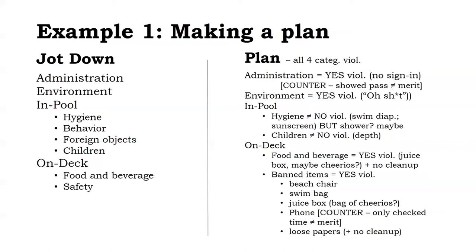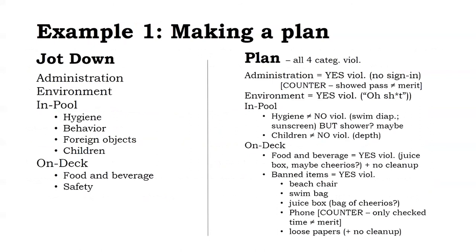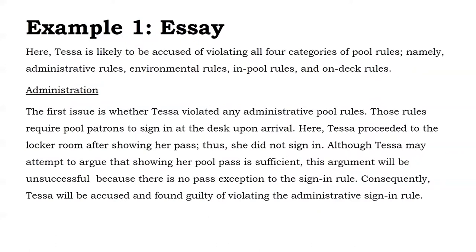This is what our plan might look like. We've decided the order we're going to write in, whether each element is met or not met, and noted the facts we're going to use under each. We've shorthand-provided explanations for ourselves. Now we can just go through and turn this into sentences — that's how having the plan works. We know exactly what we're going to say.